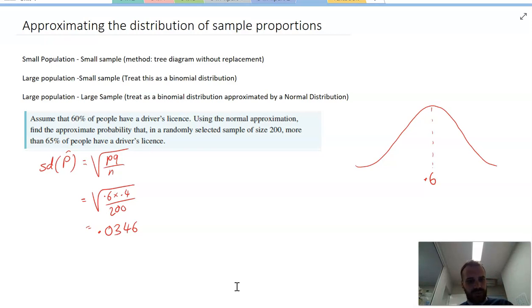Now, what we want is to find, using the normal approximation, find the approximate probability that in a randomly selected sample of size 200, more than 65% of people have a driver's license. So we're looking for the probability that the sample proportion is greater than 0.65.